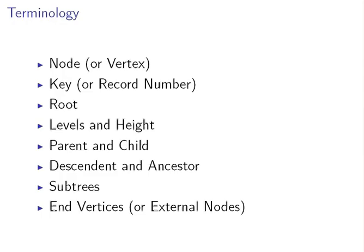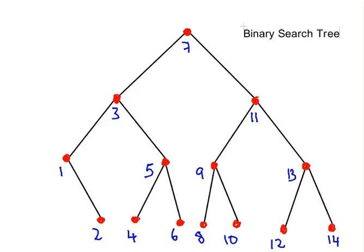The next thing we're going to look at is the root, levels and height. The root is the top vertex, the top node, and it is used to represent the start of a process. So this is the root and it's at level zero.